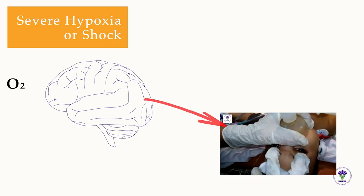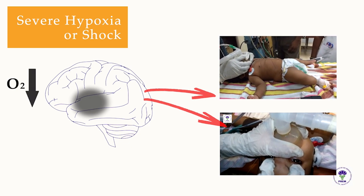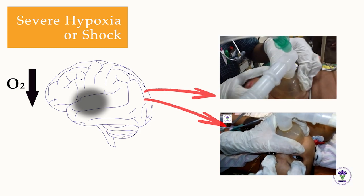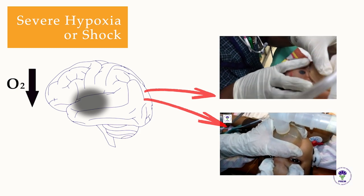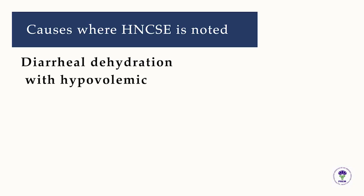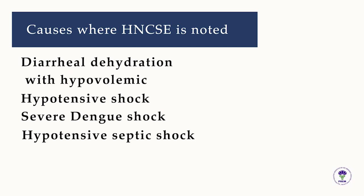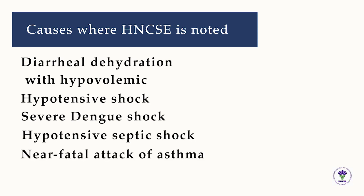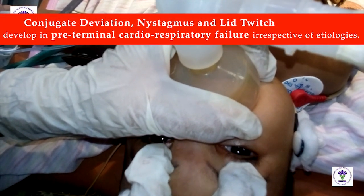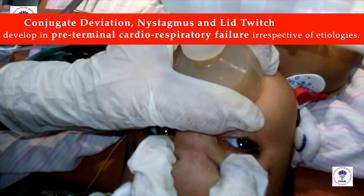Abnormal position of eyes and movements have also been noted in children presenting with cardiorespiratory failure. Severe cerebral hypoxia or cerebral hypoperfusion can also cause these movements — that is, conjugate deviation, nystagmus, or eyelid twitch. Examples include severe dehydration with hypovolemic hypotensive shock, severe dengue shock, hypotensive septic shock, near-fatal attack of asthma. In these conditions, conjugate deviation, nystagmus, or eyelid twitch develop in pre-terminal cardiorespiratory failure irrespective of etiology.